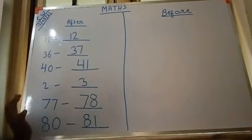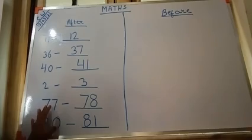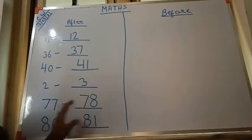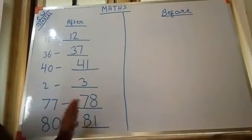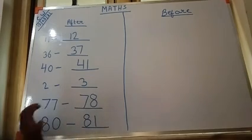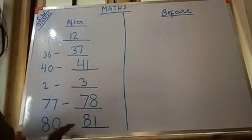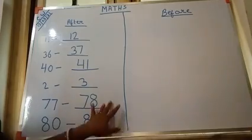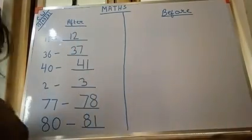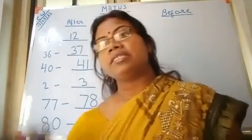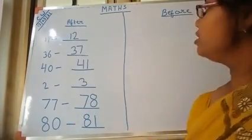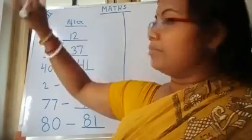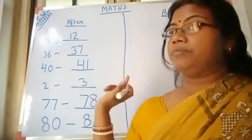Likewise, 2's next number is 3, because 3 is the next number of 2. 77's after number will be 78 because 78 is just next to 77. The after number of 80 will be 81 because 81 is just after 80. After number means the next number — always remember, when I ask verbally, you will say the next number. After means next. Before is just the opposite — the first number. Before number means the first number, not the next number.